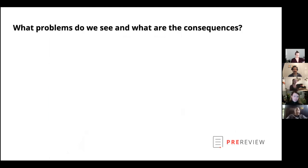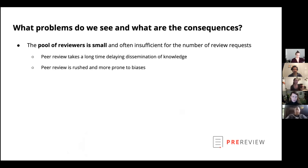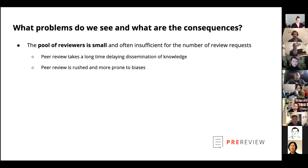I wanted to take a moment to dive into some of the problems we see with peer review and some of the consequences. This list is not meant to be comprehensive — please add more ideas to the document. The main issue we heard most is that there are not enough reviewers; the pool is too small, review requests are too high, and editors don't know how to handle it. The consequence is that peer review takes a long time, which delays the dissemination of knowledge.